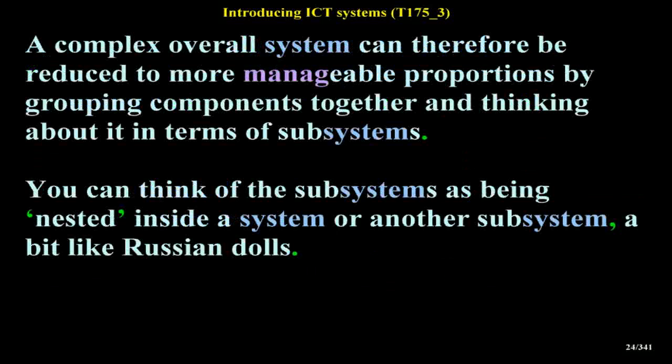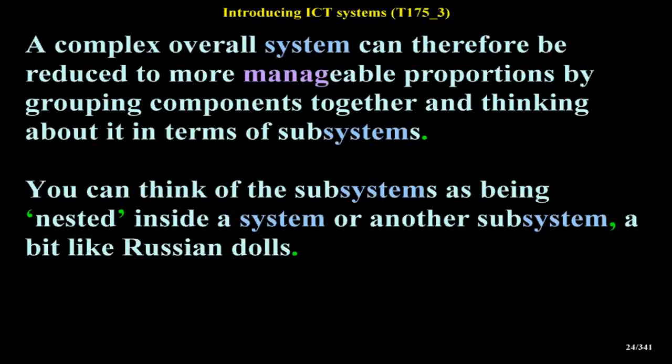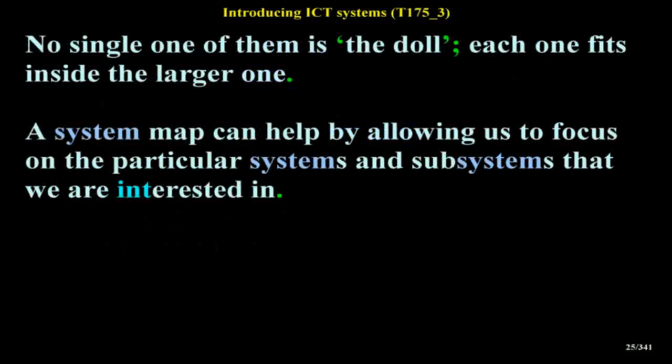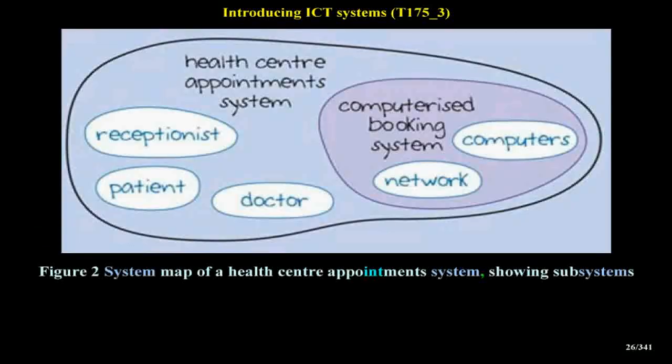A complex overall system can therefore be reduced to more manageable proportions by grouping components together and thinking about it in terms of subsystems. You can think of the subsystems as being nested inside a system or another subsystem, a bit like Russian dolls — no single one of them is the doll, and each one fits inside the larger one. A system map can help by allowing us to focus on the particular systems and subsystems that we are interested in.